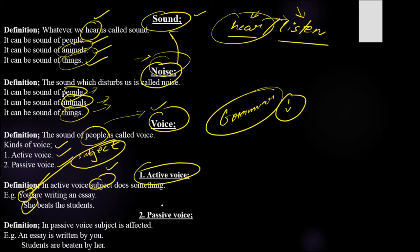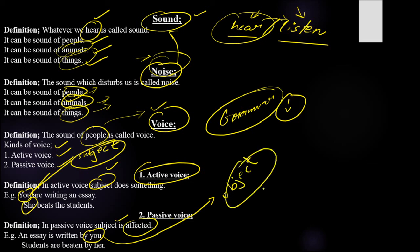Passive voice is the opposite of active voice. In passive voice, the subject is affected — the subject does not do anything but is being affected by someone. The work gets done here by another person. For example, 'An essay is written by you' — here you are affecting someone to do the action. When you affect someone to perform an action, that does not remain just an object — it becomes something else we will discuss in the next lecture.